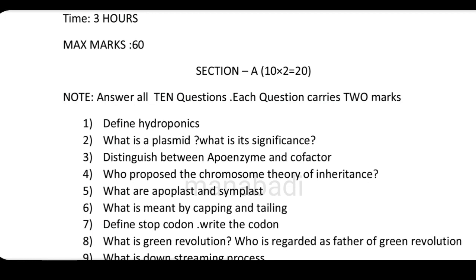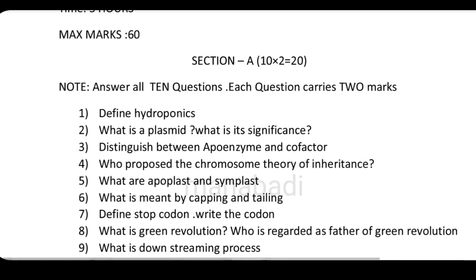So hydroponics is a type of horticulture. What is plasmid and what is its significance? Plasmid is a type of DNA. It is found in bacteria. And there is a distinction between the apo-enzyme and cofactor.